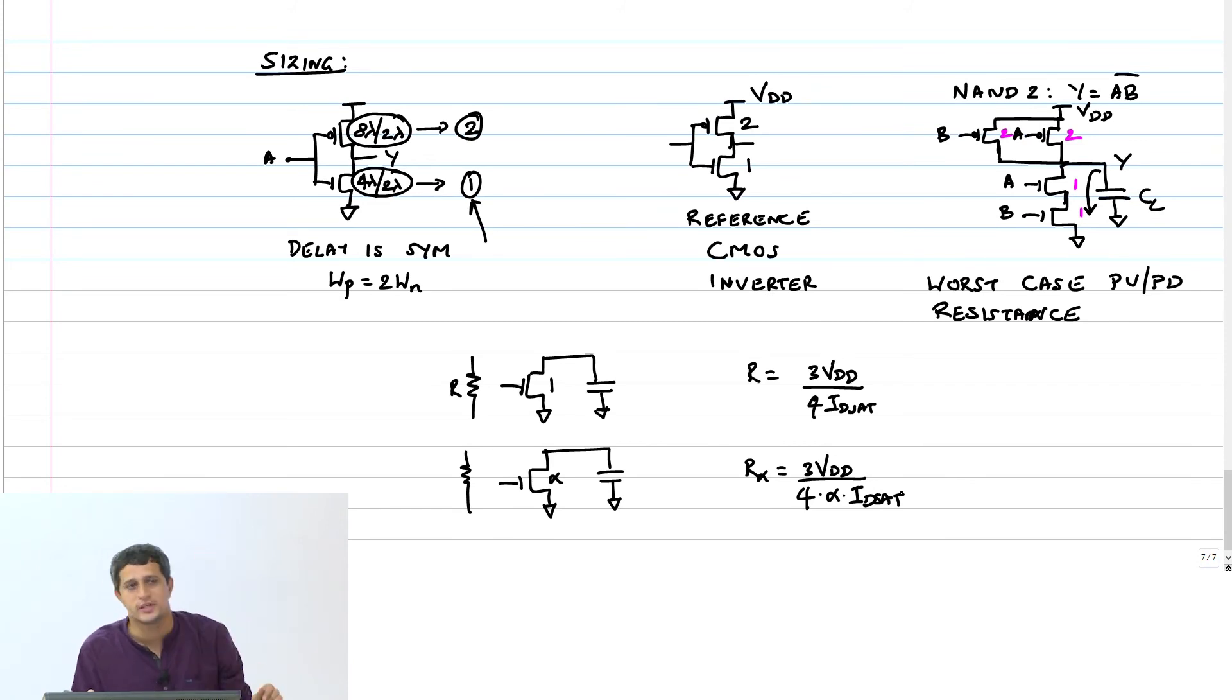And now if my width goes up by 2 or by a factor alpha, then the resistance is going to be R alpha is 3VDD by 4 into alpha times ID,sat. Because ID,sat is proportional to W. If I increase my W I have more current, linearly more current, and therefore 1 by alpha times the resistance. Therefore this will be R by alpha.